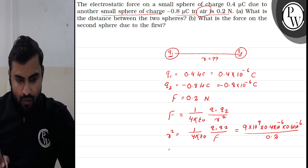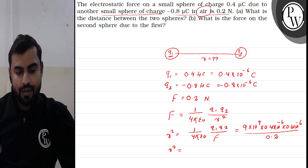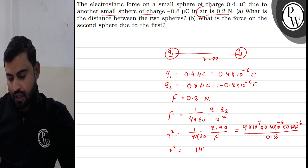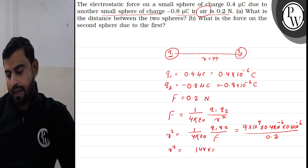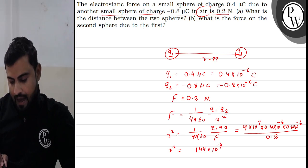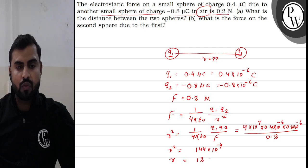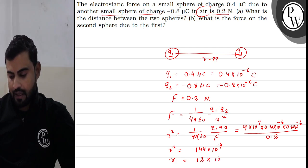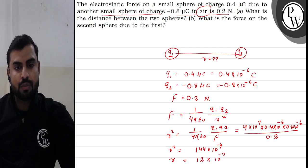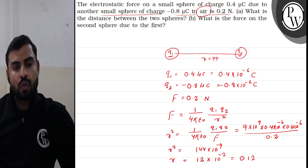When we calculate the value of R squared, we get 144 into 10 to the power minus 4. So the square root of 144 is 12, and the square root of 10 to the power minus 4 is 10 to the power minus 2, which gives R equal to 0.12 meter.